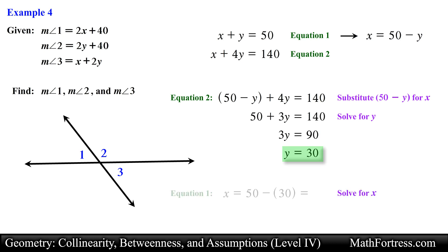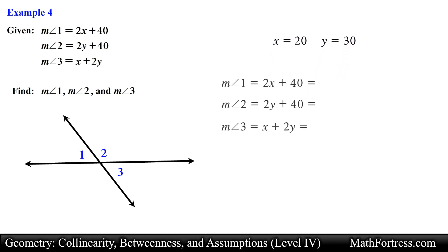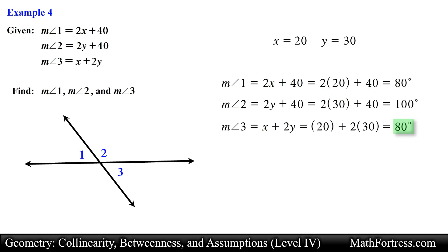Next we take this value for y and substitute it into the first equation to solve for the variable x, obtaining x equals 20. The last step is to evaluate the algebraic expression for each of the three angles by substituting the values for x and y. Doing that and simplifying, we obtain 80 degrees for angle 1, 100 degrees for angle 2, and 80 degrees for angle 3. This is our final answer.